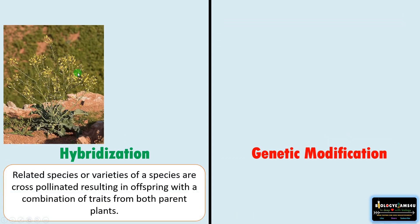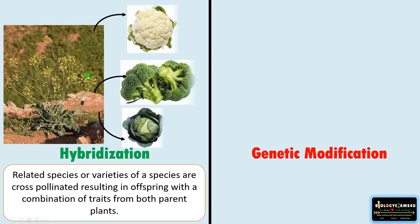Hybridization involves related species or varieties that are cross-pollinated, resulting in offspring with a combination of traits from both parents. For example, this is wild mustard. From it we now have cauliflower, broccoli, and cabbage — all produced through selective breeding or hybridization over hundreds of years.